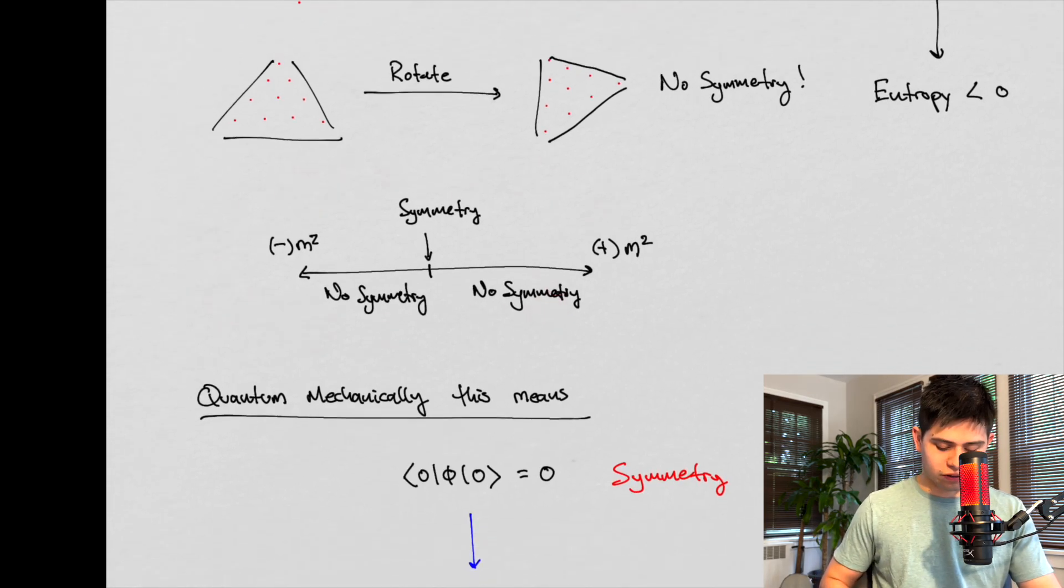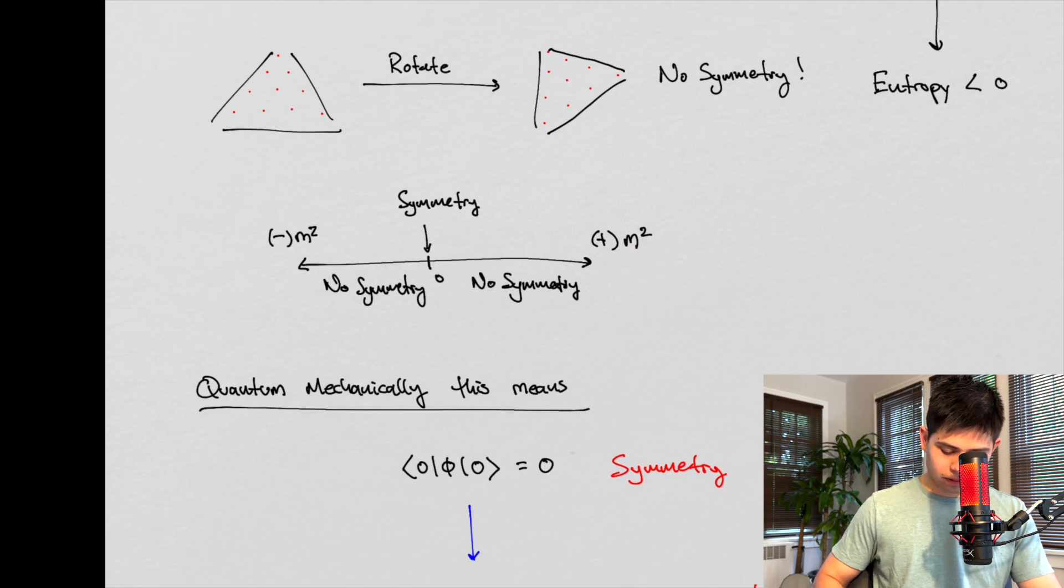again, here's our picture. I'm not going to reiterate this picture again. But again, we have positive mass, negative mass squared, symmetry at zero. Right? And then no symmetry and no symmetry within these regimes. Quantum mechanically, this means that,